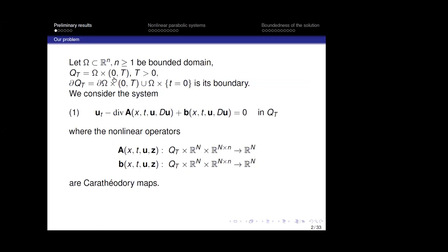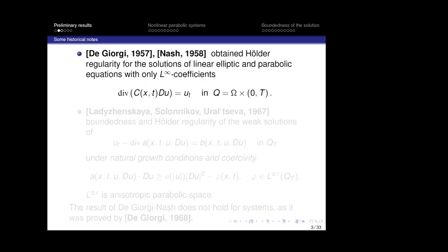First, we consider a bounded domain omega, a subset of R^n for n greater or equal to one, the cylinder Q_T equal to omega times the interval zero to capital T. In this cylinder we consider this parabolic non-linear system, where the operators capital A and B are Carathéodory mappings. There have been many researchers involved in studying the problem of boundedness of solutions, both for elliptic and parabolic systems and equations.